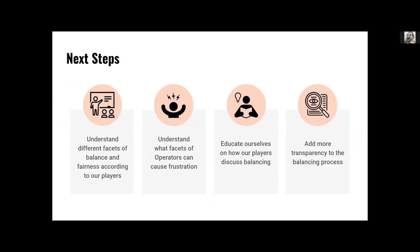So we wanted to see what we could do about supplementing the data for making design decisions during the balancing process. And we landed on four primary goals. So we knew we wanted to understand the different facets of balance and fairness according to our players. So from their own perspective, what was happening? We wanted to understand what facets of an operator can cause frustration. We wanted to also educate ourselves on how our players are discussing balancing. What types of terminology are they using? How are they discussing the comparison of one operator to another? These types of things. We also really wanted to ensure that we were adding more transparency to the balancing process. This was really important for us both internally and externally. We wanted to be able to provide more context internally when making decisions, but it was also really important to us that we use the information that we were getting from this additional supplementary process and educating our community about balancing as well.